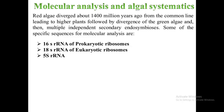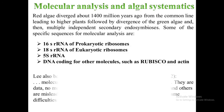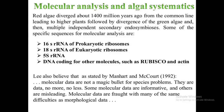Although the small sequence of 5S rRNA makes it easier to sequence, the data have been suspect because of large deviation. Apart from these, DNA coding for other molecules such as Rubisco and actin protein have also been used in determining phylogeny. Gene sequencing has been the most active field of phycological systematics in the last 2–3 decades and has provided important new information on the relationships between algae. However, like Manhart and McCartney, Lee also believes that molecular data are not a magic bullet for species problems — they are data, no more, no less. Some molecular data are informative and others are misleading; molecular data are fraught with many of the same difficulties as morphological data.